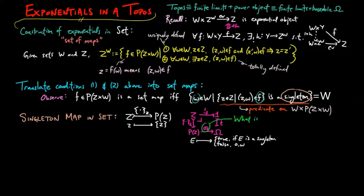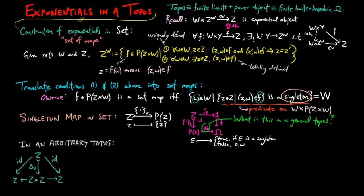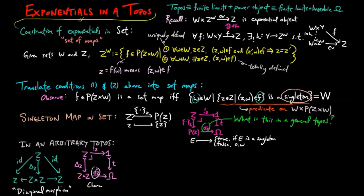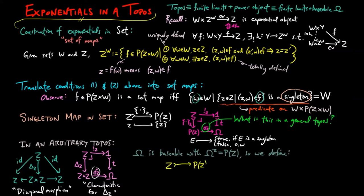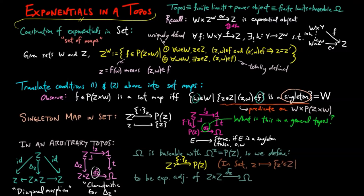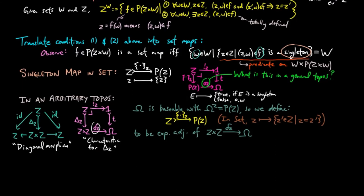In any category with binary products there is a diagonal morphism delta sub z induced by the identity morphisms. Since the identity morphism is a monomorphism, the diagonal morphism must also be a monomorphism, and thus in any topos is classified by a morphism lowercase delta sub z — the equality predicate. Since the sub-object classifier is baseable in a topos, we define the singleton morphism as the exponential adjoint of the equality predicate. In the category of sets this sends an element z to the set of elements z' in Z such that z equals z', which is exactly the singleton assignment.